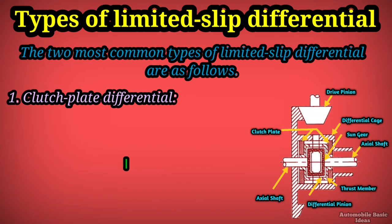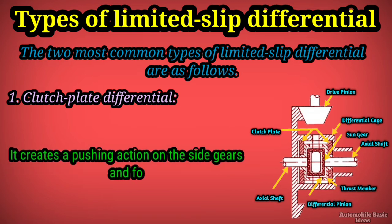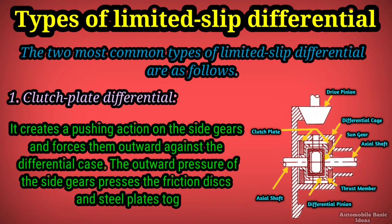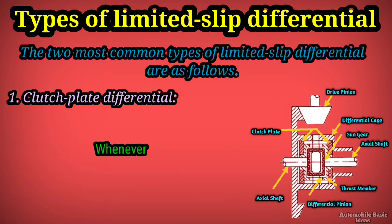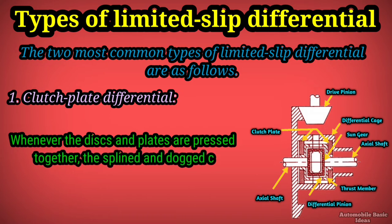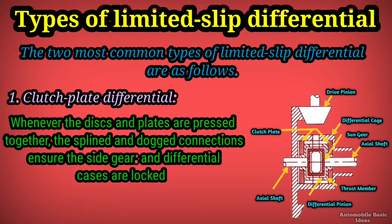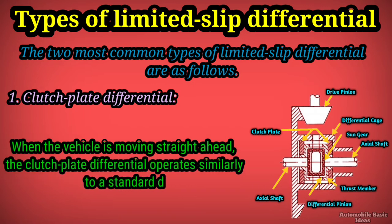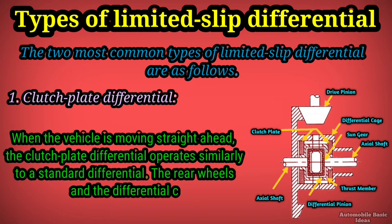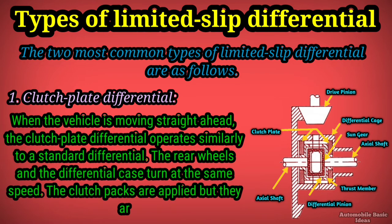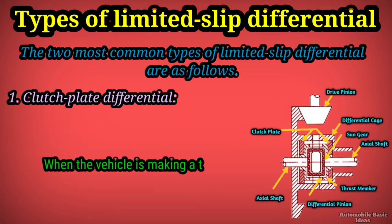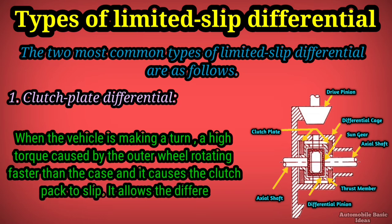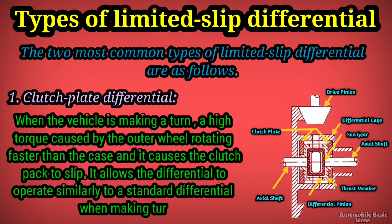Since the pinion and side gears are beveled gears, their teeth try to come out of engagement when transmitting engine torque, creating a pushing action that forces the side gears outward against the differential case. This outward pressure presses the friction discs and steel plates together between the side gears and case, locking the side gear and differential case together via splined and dogged connections. When moving straight ahead, the clutch plate differential operates similarly to a standard differential. When making a turn, the high torque caused by the outer wheel rotating faster causes the clutch pack to slip, allowing the differential to operate like a standard differential during turns.